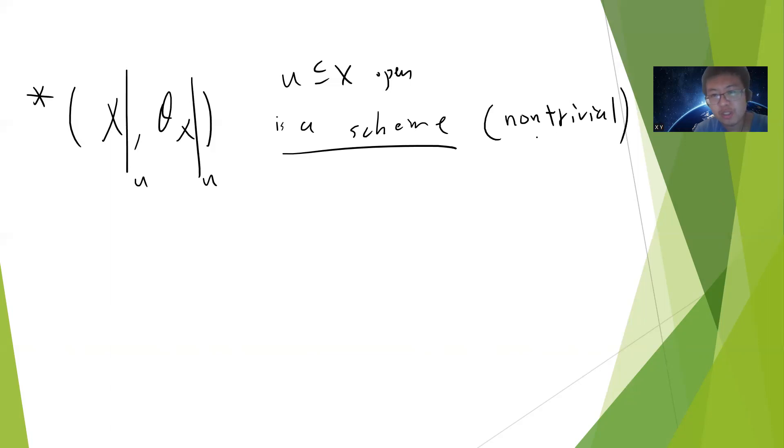There is a fact I will prove in the next video: if you take a scheme and restrict it to some open subset U — where U is open in X — then U is also a scheme. In other words, an open subset of a scheme is a scheme. This proof is non-trivial, so you need to think a little bit.